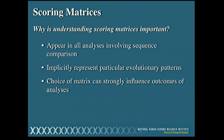When you do a BLAST search or any analysis involving sequence comparison, these scoring matrices are all being used in the background. They're always part of a sequence analysis. The selection of them is important because each one implicitly represents a particular evolutionary pattern, so the choice of matrix can strongly influence the outcome of your analysis — the results you get back when you do that BLAST search. For a lot of things you might want to do, using the default values on NCBI's BLAST website may not be the right choice. We're going to spend a good amount of time talking about these individual scoring matrices and some guidelines about which ones to choose.